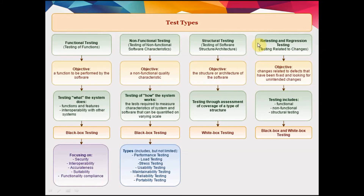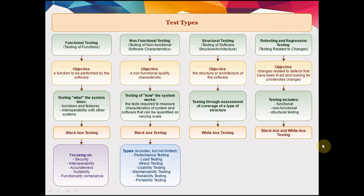Retesting and regression testing are testing related to changes. The objective is changes related to defects that have been fixed and looking for unintended changes. Testing includes functional, non-functional, and structural testing. This fourth test type — retesting and regression testing — can include all three previous test types, and it can be both white box and black box testing.